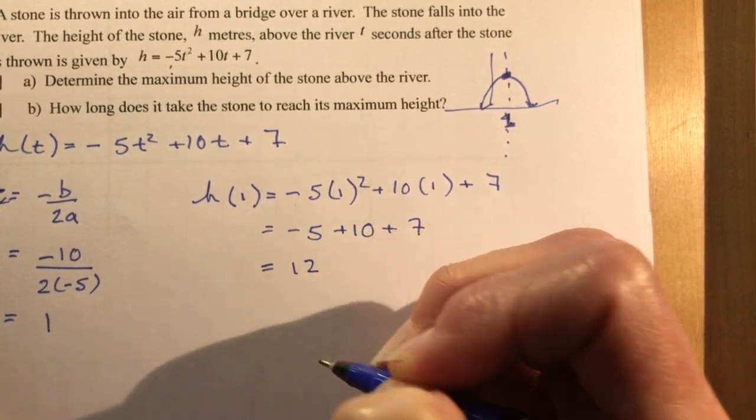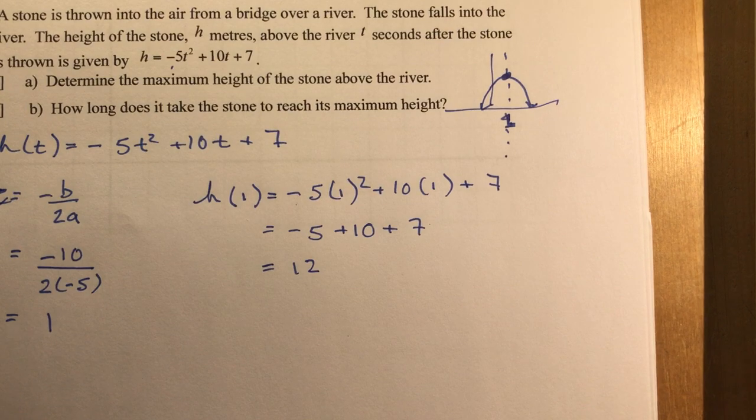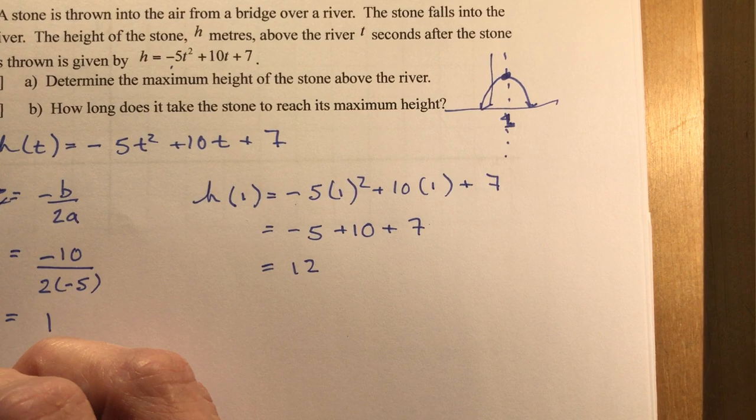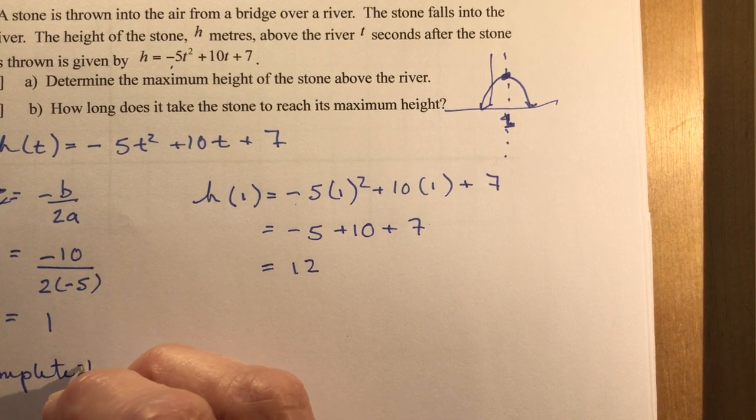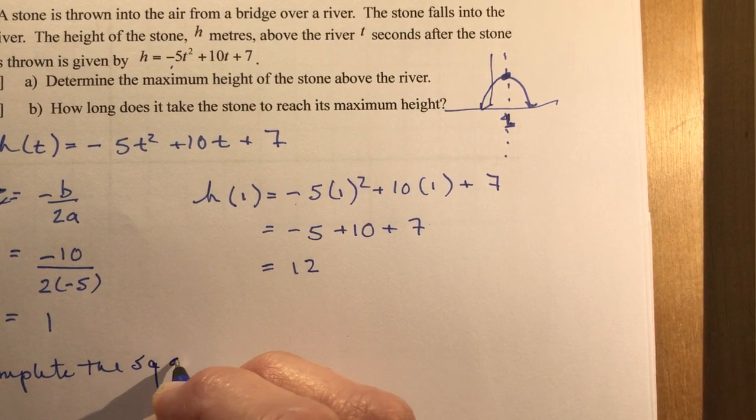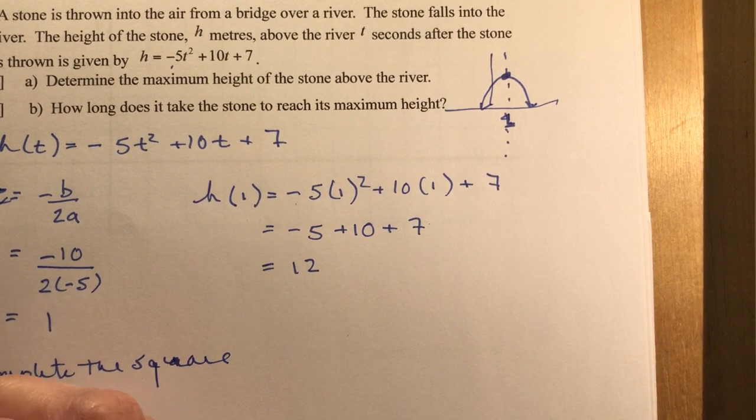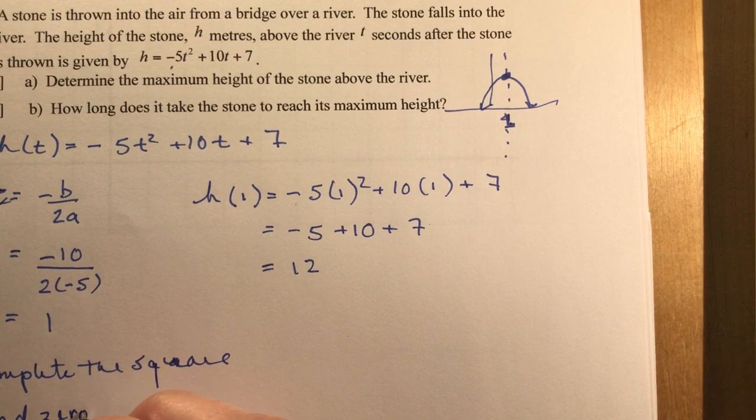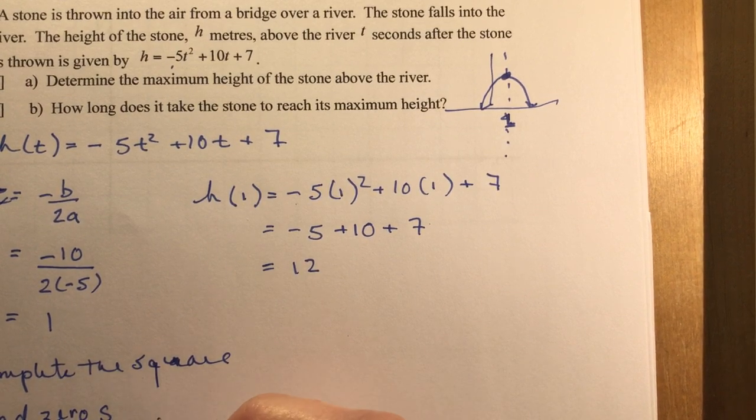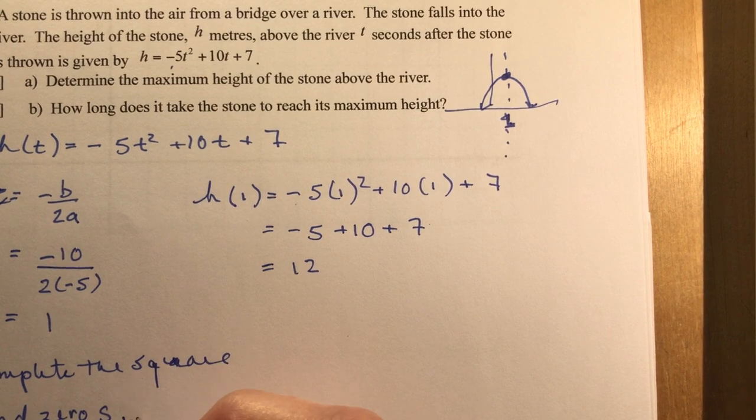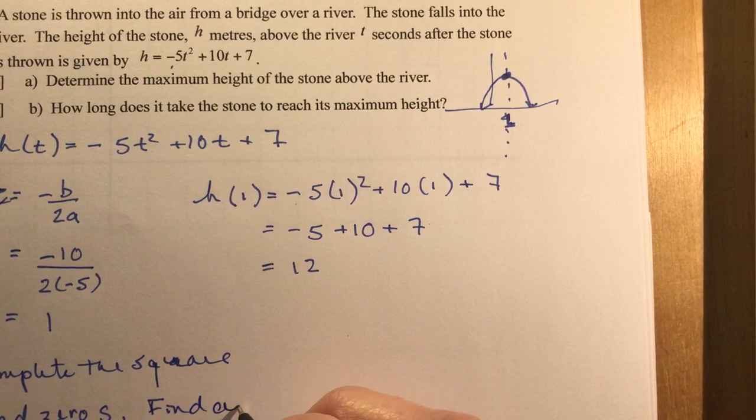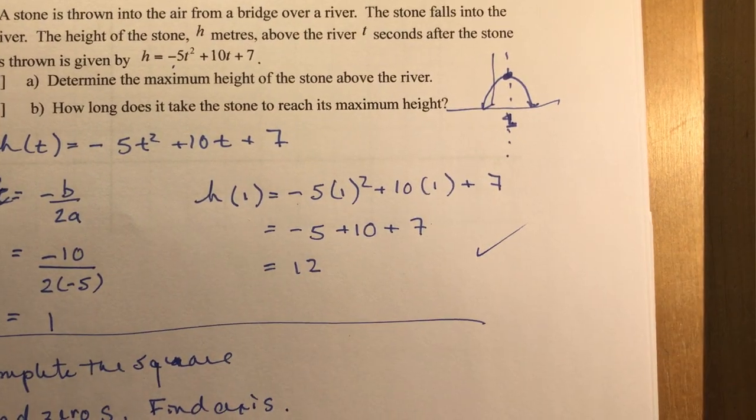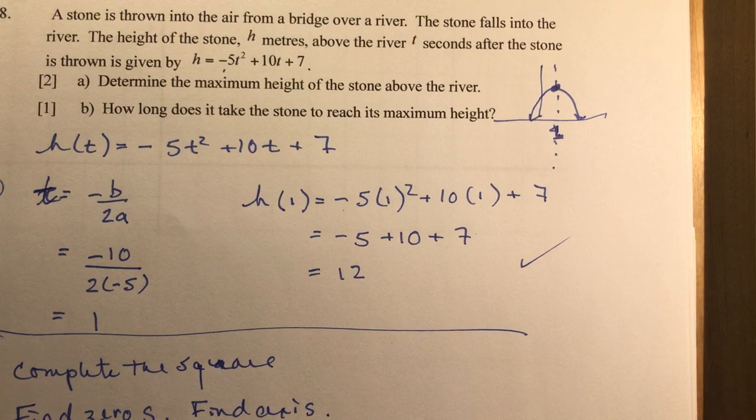Now if you got a negative value, then you know you've made a mistake. You can't have a maximum height at a negative time. So I want to know what is the height at one second, and that will give me the maximum. I plug in my 1 everywhere, and that gives me minus 5 plus 10 plus 7. That's 12. This would be choice 1. Choice 2 would be complete the square. And of course the third option, which would be the longest one, is find the zeros. You could use quadratic formula, and then add them up, divide by two. This is obviously the best way to do it, because it's quick.